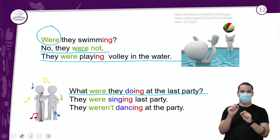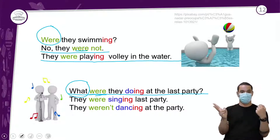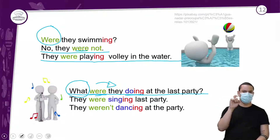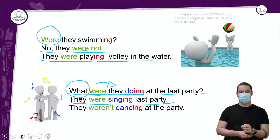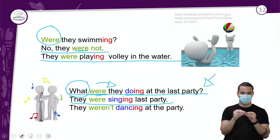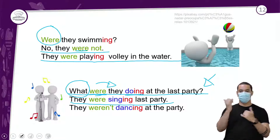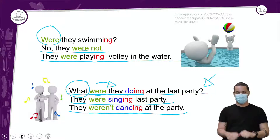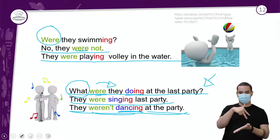'What were they doing at the last party?' — o que eles estavam fazendo na festa passada? Perceba que o pronome interrogativo 'what' vem na frente, mas o verbo to be permanece antes do sujeito. Resposta: 'They were singing at the last party' — estavam cantando. Aqui não se usa short answer, é preciso dar mais informação. Negação: 'They weren't dancing at the party' — eles não estavam dançando.